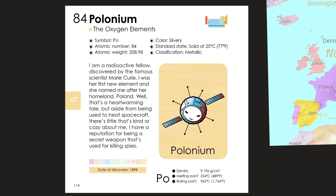Its date of discovery was in 1898. Its density is 9.196 grams per centimeters cubed. Its melting point is 254 degrees Celsius or 489 degrees Fahrenheit, and boiling point is 962 degrees Celsius or 1,764 degrees Fahrenheit.